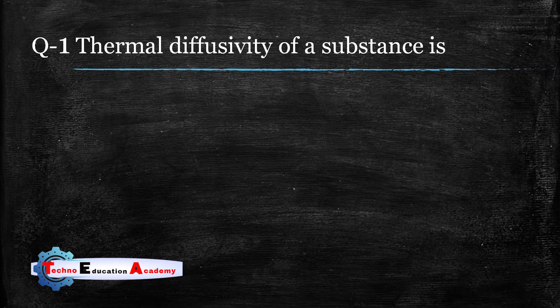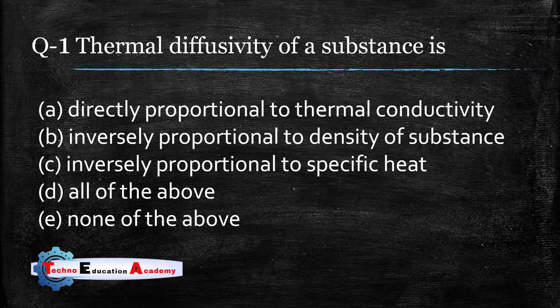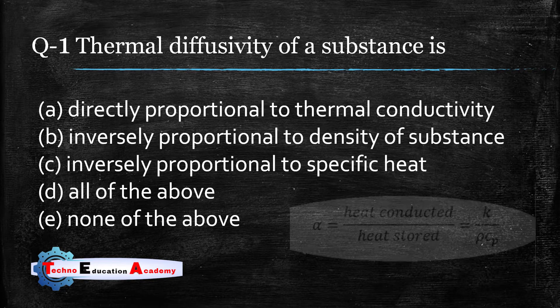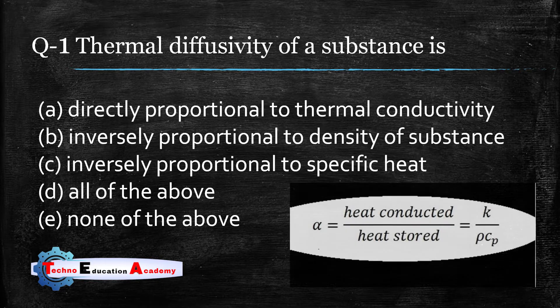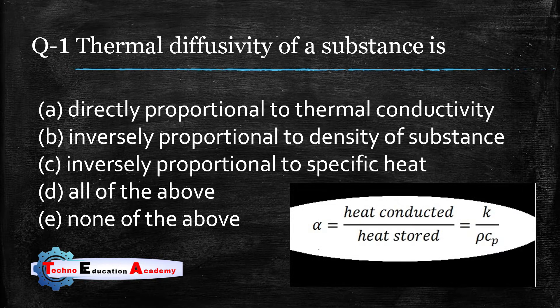Question one: thermal diffusivity of a substance is directly proportional to thermal conductivity. Thermal diffusivity is the ratio of k divided by rho times c, so it is directly proportional to thermal conductivity.